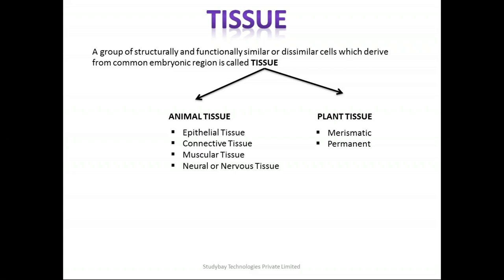Tissue can further be classified as animal tissue or plant tissue. For animal tissue we have four different classes: epithelial tissue, connective tissue, muscular tissue, and nervous tissue. For plant tissue we have either meristematic or permanent tissue. Let's discuss all of these classes one by one and see how we can differentiate them.